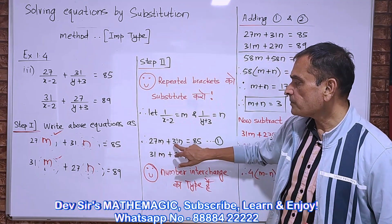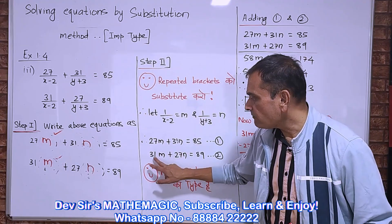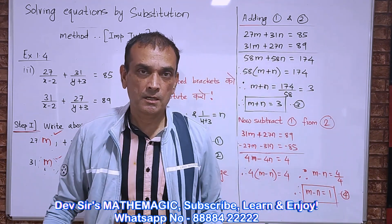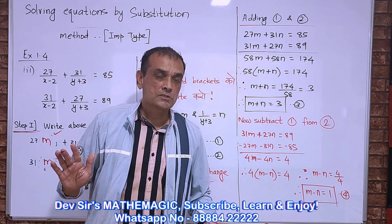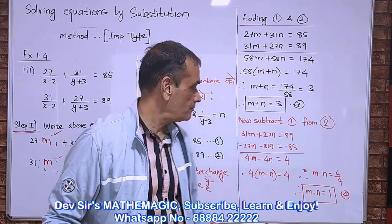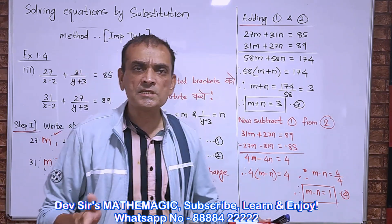Here 27m plus 31n, and in the second equation 31 has come here, 27 has gone. Numbers have interchanged. So do you remember the method how to solve numbers interchanged type? Add equations 1 and 2.